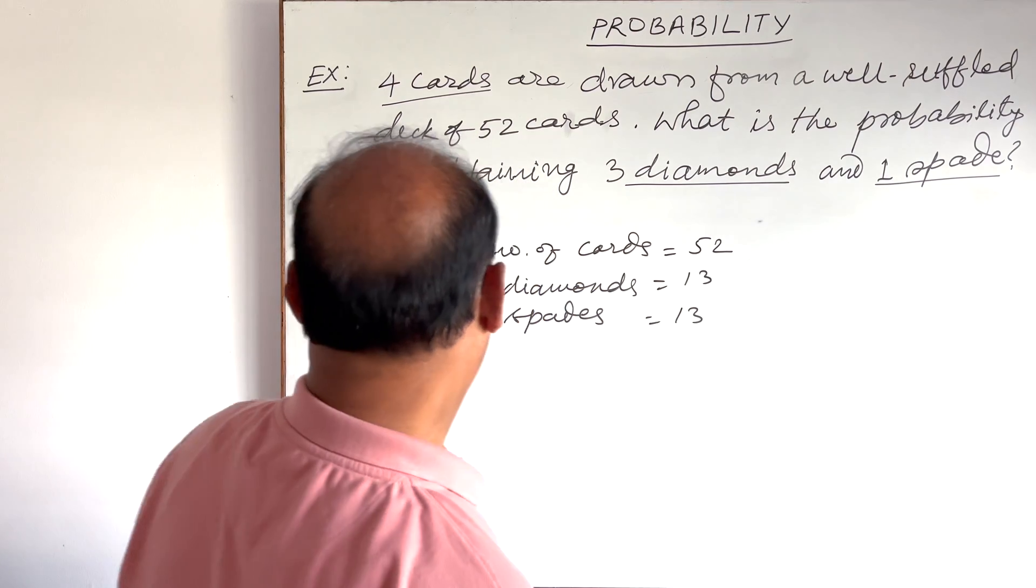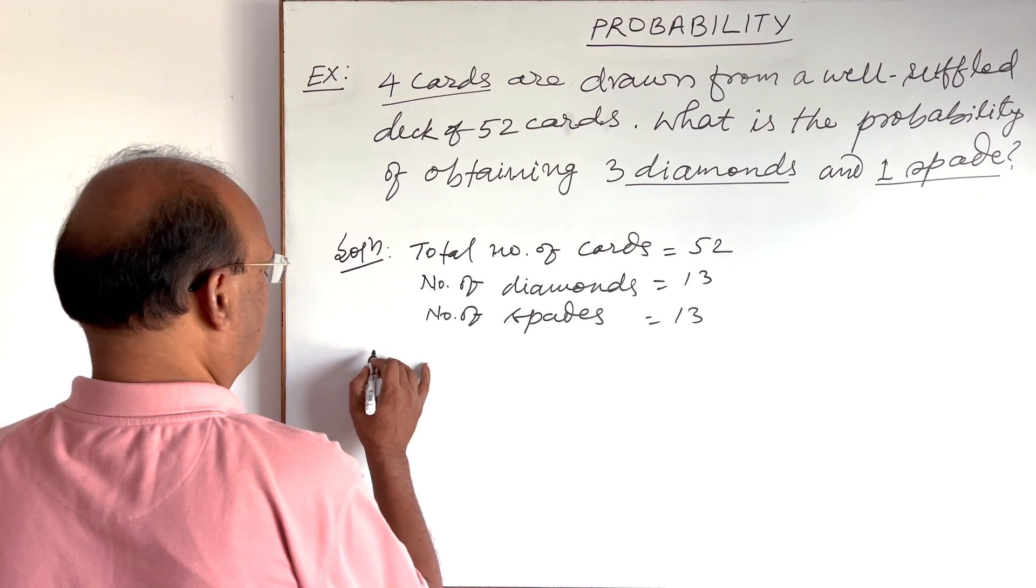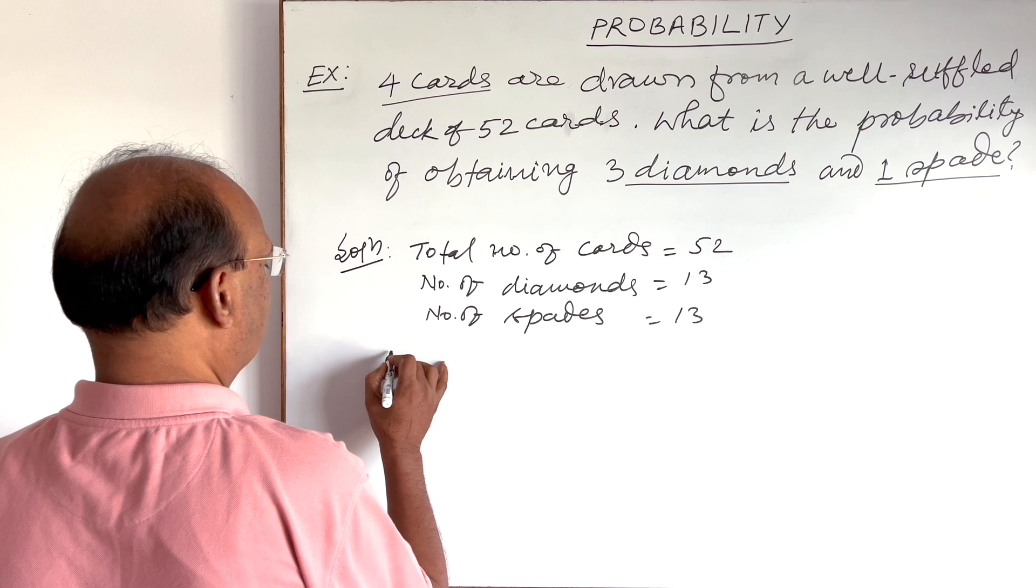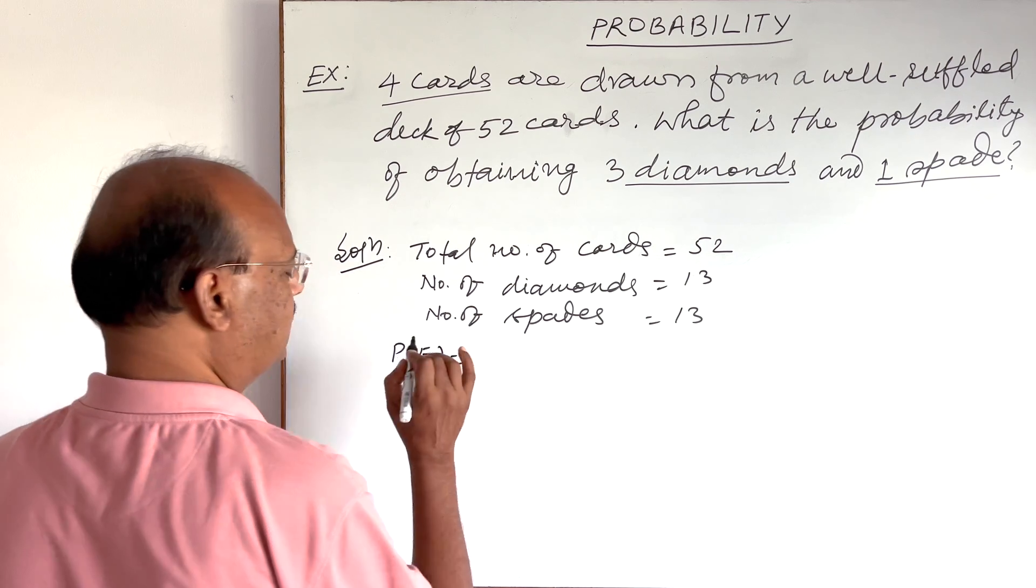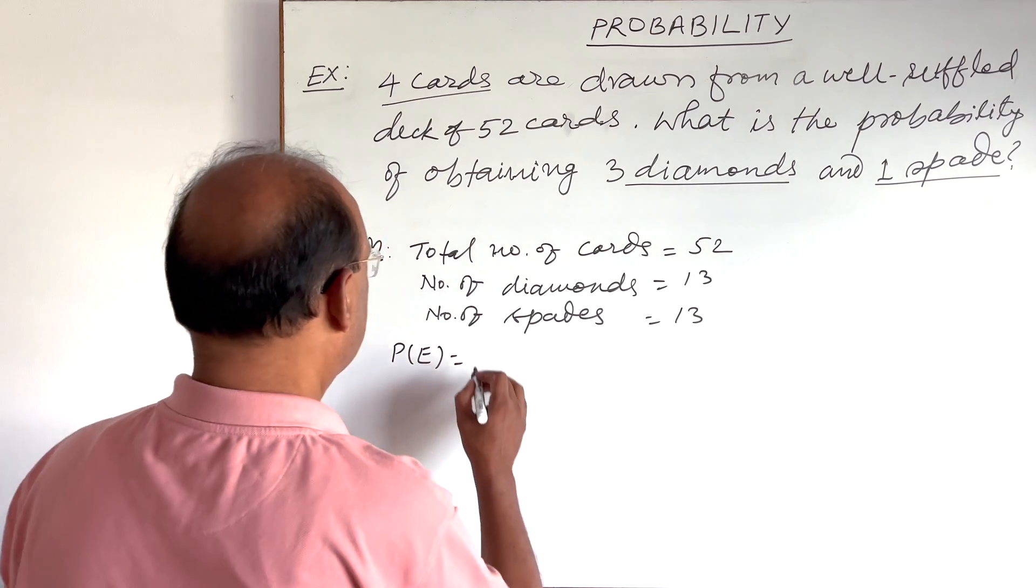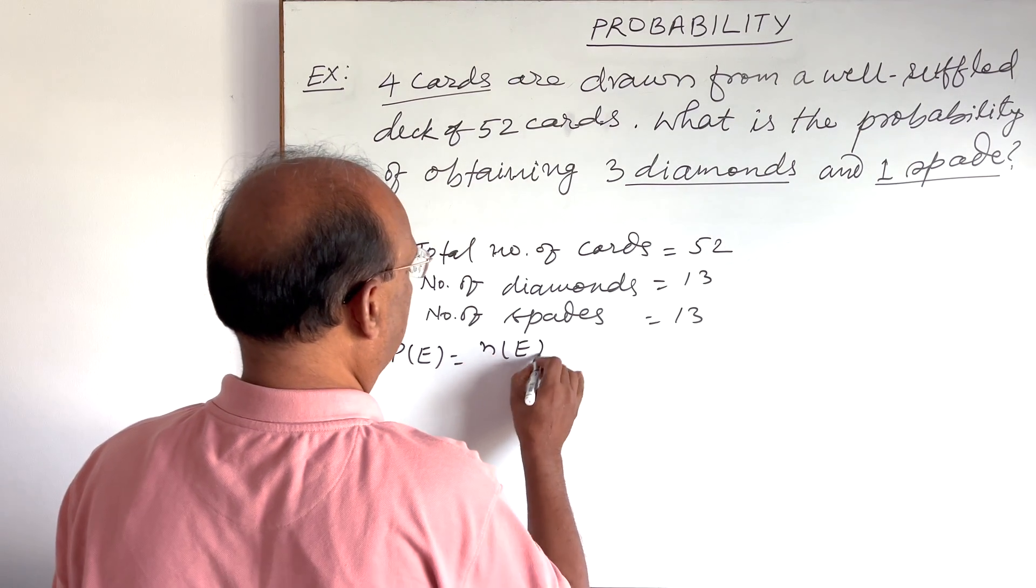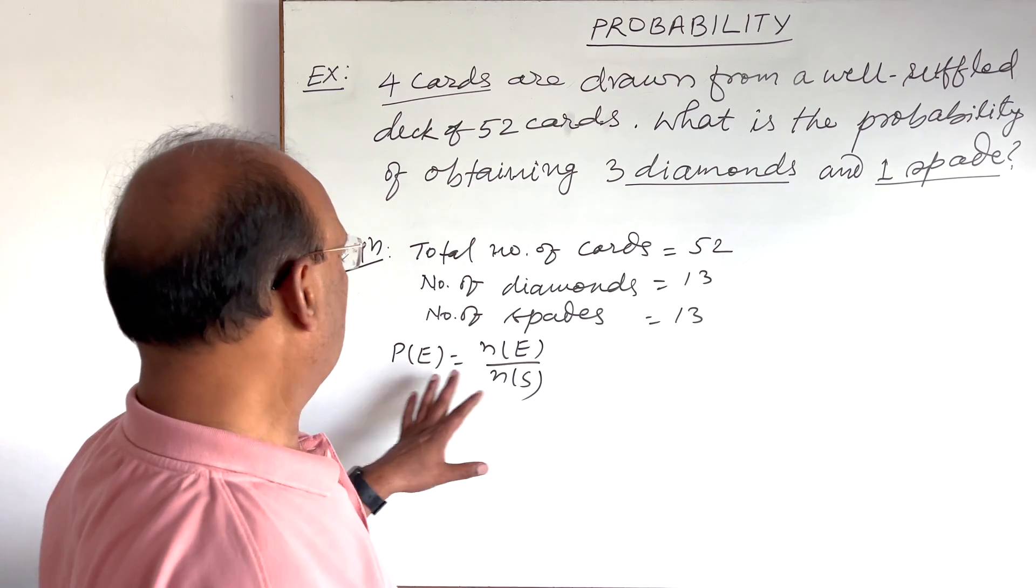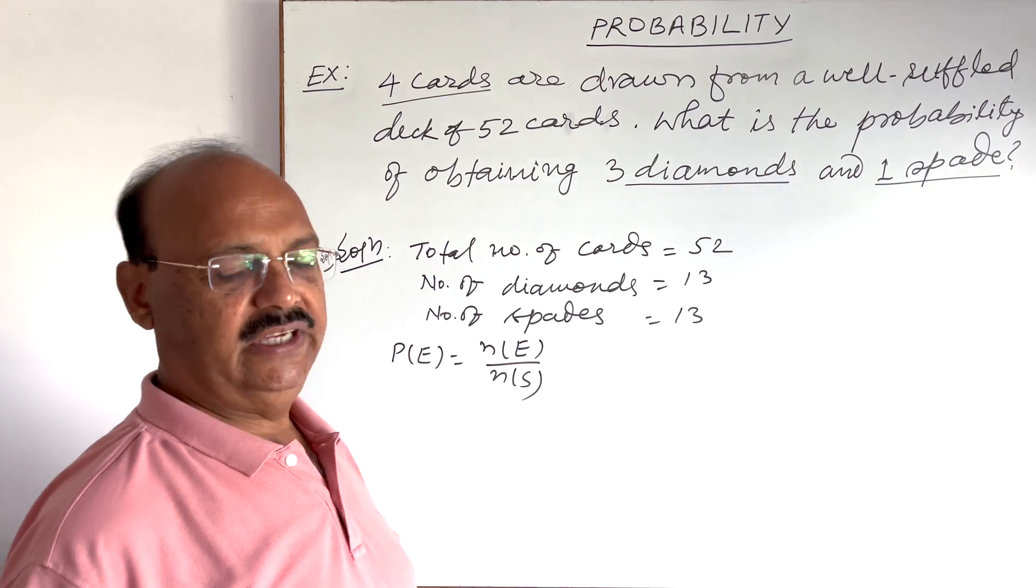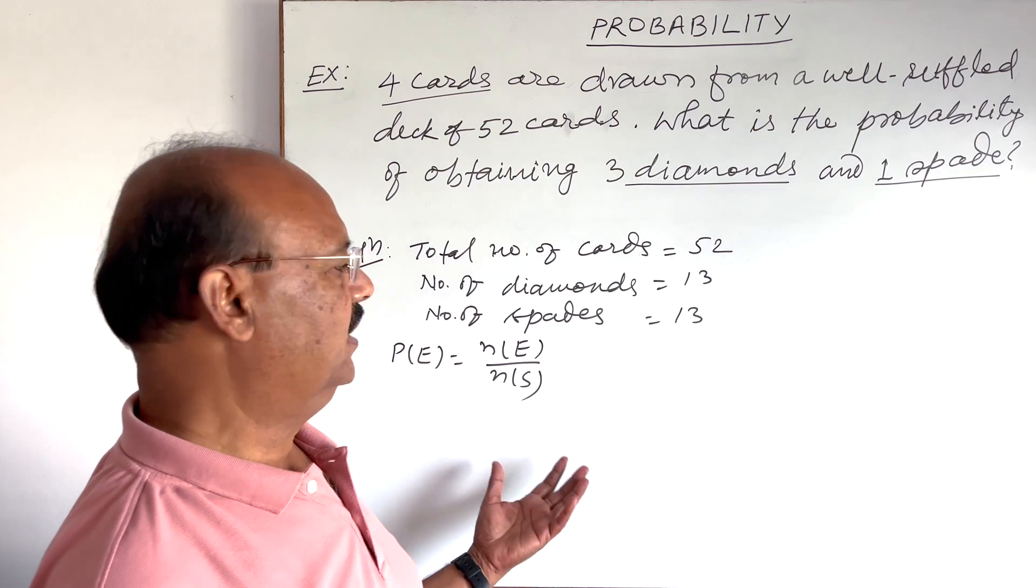First of all, we understand that we have the formula probability of E. E is any event here. This is equal to n(E) divided by n(S). With the help of this formula, we will get the probability of any event.